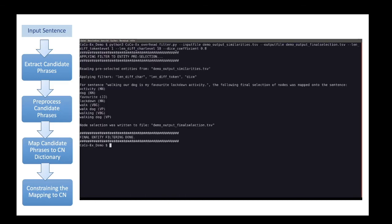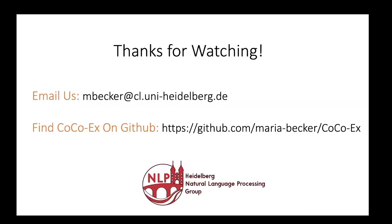Finally, you get a filtered list of relevant and meaningful ConceptNet nodes extracted from your text, which you can then further use, for example for relation classification systems or for building subgraphs from texts. We hope that you find CocoaX helpful and enjoyed our video. Thanks for watching, and if you have any questions, don't hesitate to get in contact.